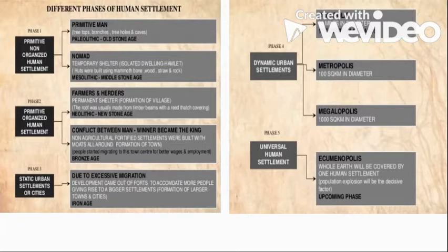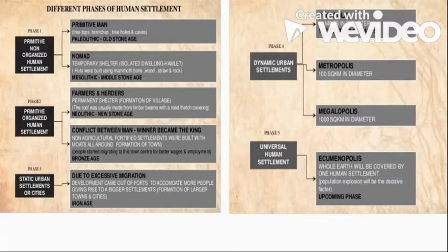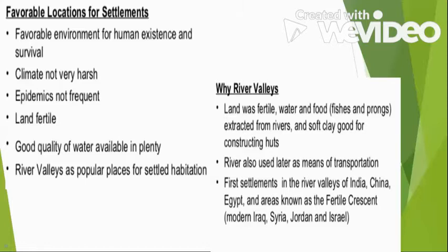We see a small settlement growing up to a megalopolis, which is around 1,000 square kilometers in diameter. The last phase, which is yet to come, is the ecumenopolis — we have not yet arrived at that stage, but we have already arrived at megalopolis. For example, the eastern coast of the US in North America is a megalopolis.